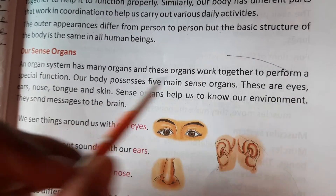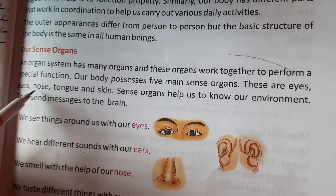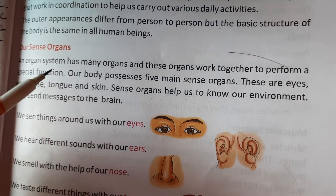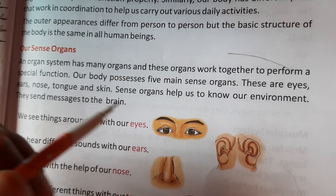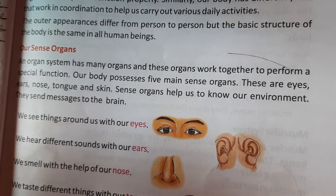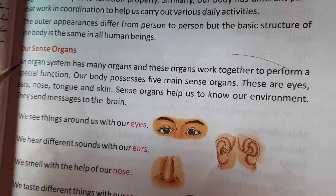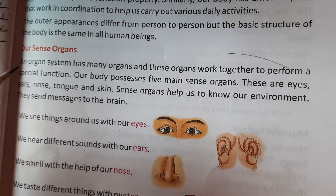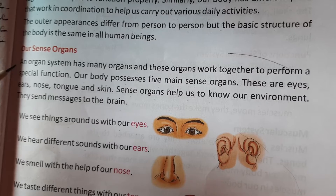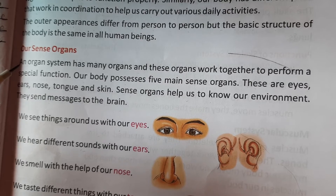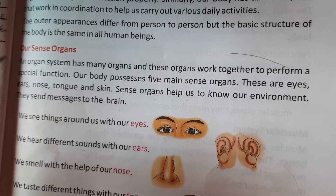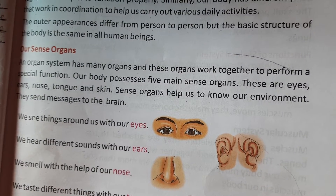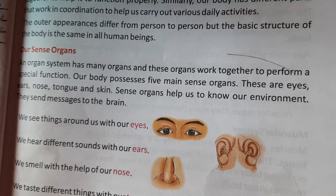Our body possesses five main sense organs. These are: eyes, ears, nose, tongue, and skin. These five sense organs are the main parts of our body. They are our body's primary sense organs.